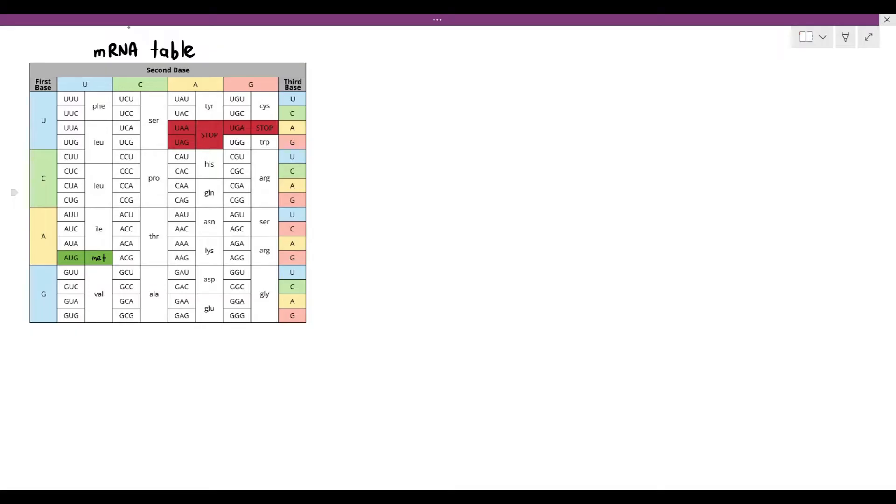The mRNA table basically tells you which codons will translate to which amino acids. For example, as you can see, AUG, they've highlighted it in green. The AUG is highlighted because it's a start codon and it translates into the amino acid called methionine, which is shortened into MET.